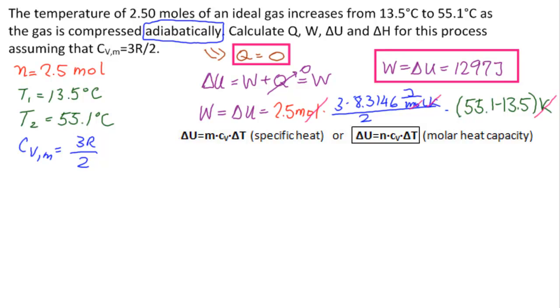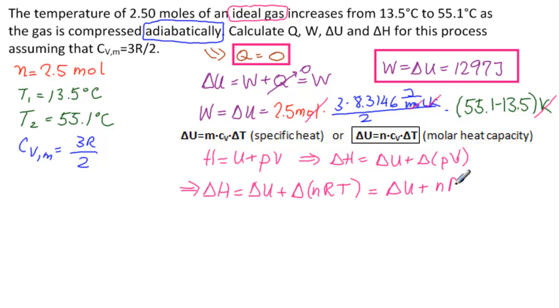So what do we have with delta H that we can use? We have several different formulas. We know in basic that H is equal to U plus PV. So delta H is equal to delta U plus delta PV. And we have an ideal gas. So we can use the ideal gas law and say that that means delta H is equal to delta U, which we have calculated, plus delta nRT. And these are constants, so just delta T. So delta U plus nR delta T.